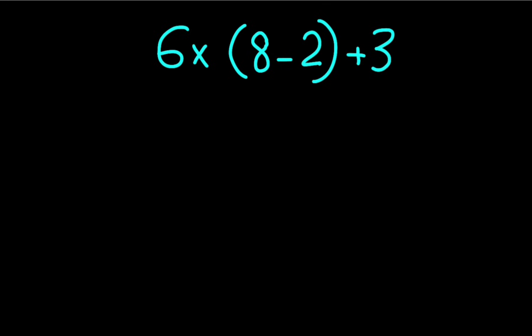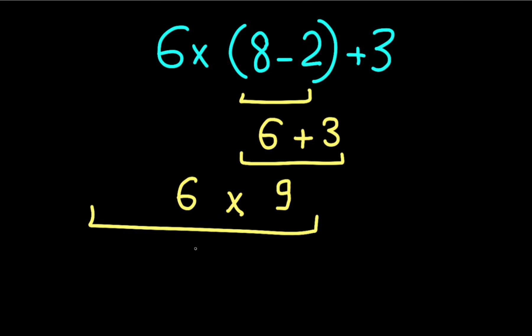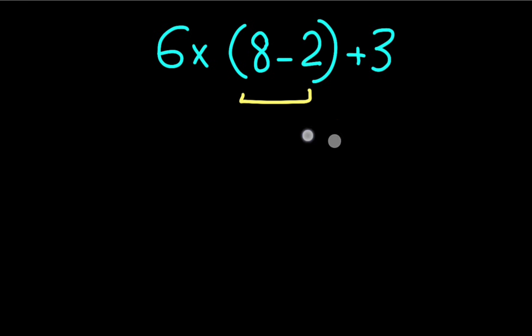Now 8 minus 2 equals 6, 6 plus 3 gives us 9, and 6 times 9 gives us 54. But this answer is not correct, because according to the order of operations we have to solve this math expression differently.